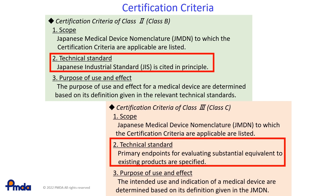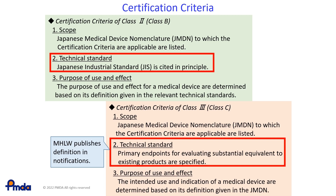Primary endpoints for evaluation of Class II are mostly cited in JIS and IEC. Whereas for Class III, the method of evaluation for primary endpoints using JIS, ISO and/or IEC is defined in Notifications published by MHLW.